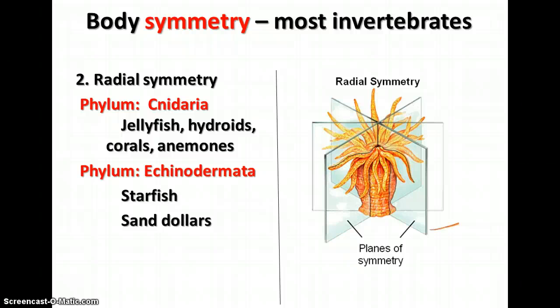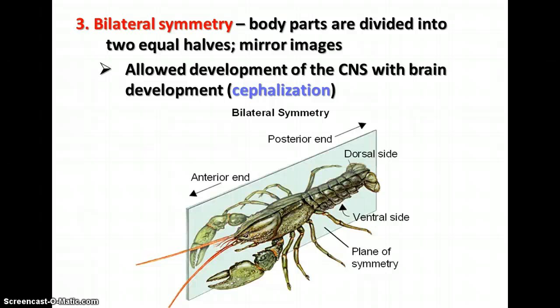Most invertebrate animals have some sort of body symmetry other than the sponges. The second form of symmetry is radial symmetry. There are two phyla which have radial symmetry: Phylum Cnidaria, which includes jellyfish, corals, and anemones, and Phylum Echinodermata, which includes starfish and sand dollars. You can see that body parts are arranged from a central axis radiating outward like the spokes of a bicycle wheel. The third form is bilateral symmetry, where body parts are divided into two equal halves that are mirror images of each other. This is really important because it allowed the development of the central nervous system with brain development, called encephalization or the development of a head region, which is very important in the development of more advanced animal groups.